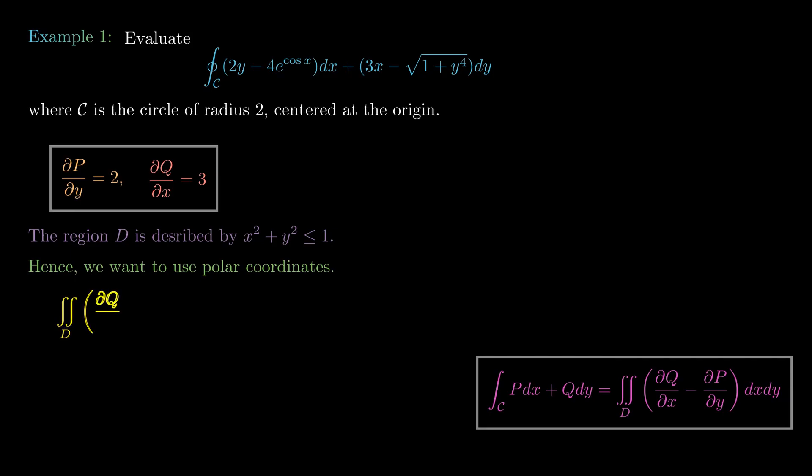Therefore we can write the double integral over D of partial q partial x minus partial p partial y dx dy as the integral from 0 to 2 pi of the integral from 0 to 2 of, well, partial q partial x is 3, partial p partial y is 2, so we'll have 3 minus 2, and then dx dy transforms to r dr d theta.